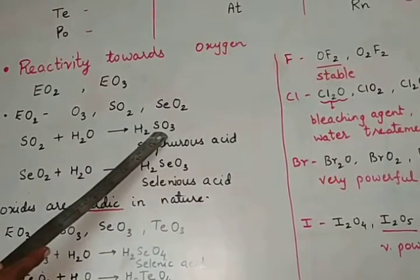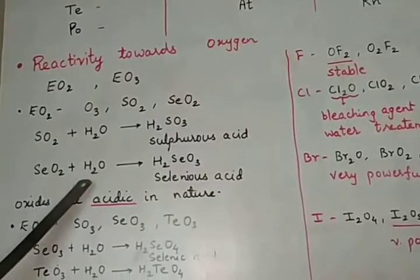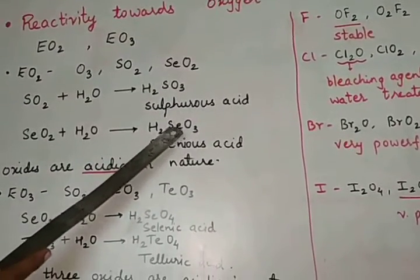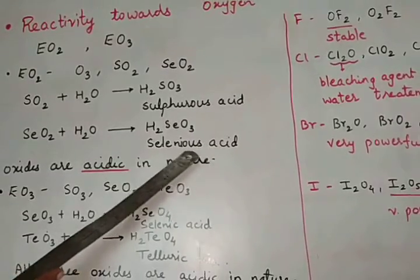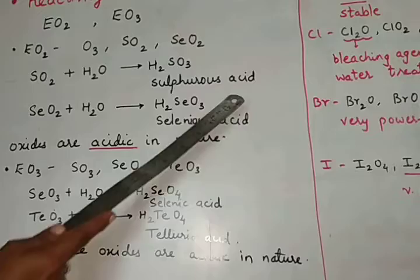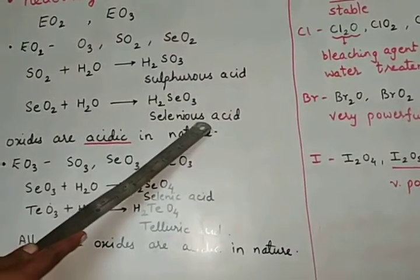The oxidation state of sulfur is less here. SO2 plus H2O combines to give H2SeO3, again a simple reaction called selenious acid. Sulfurous acid and selenious acid.